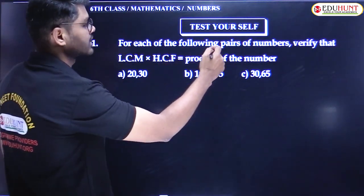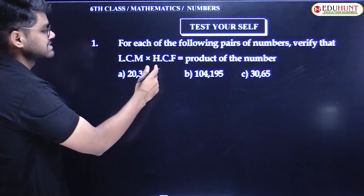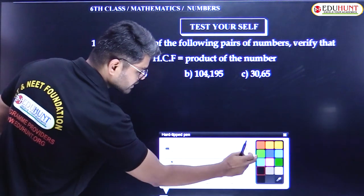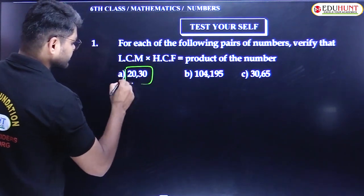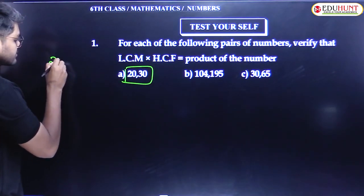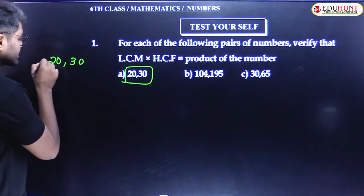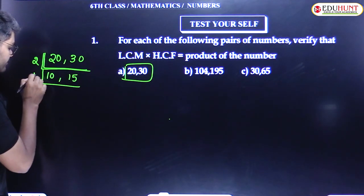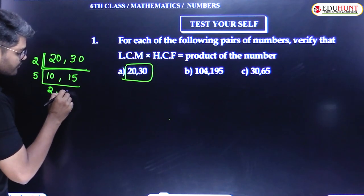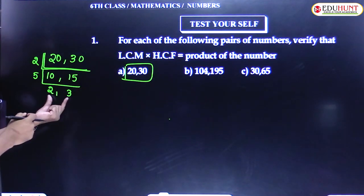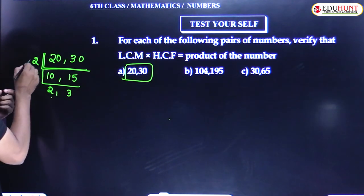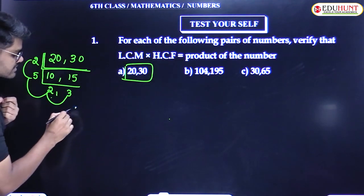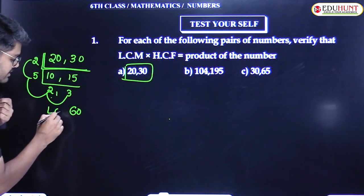For each of the following pairs of numbers, verify that LCM × HCF is equal to the product of the numbers. First, take the LCM of 20 and 30 using the division method. 2 divides giving 10 and 15, then 5 divides giving 2 and 3. Since 2 and 3 are co-prime numbers, multiply all: 2 × 5 × 2 × 3 = 60. So the LCM is 60.